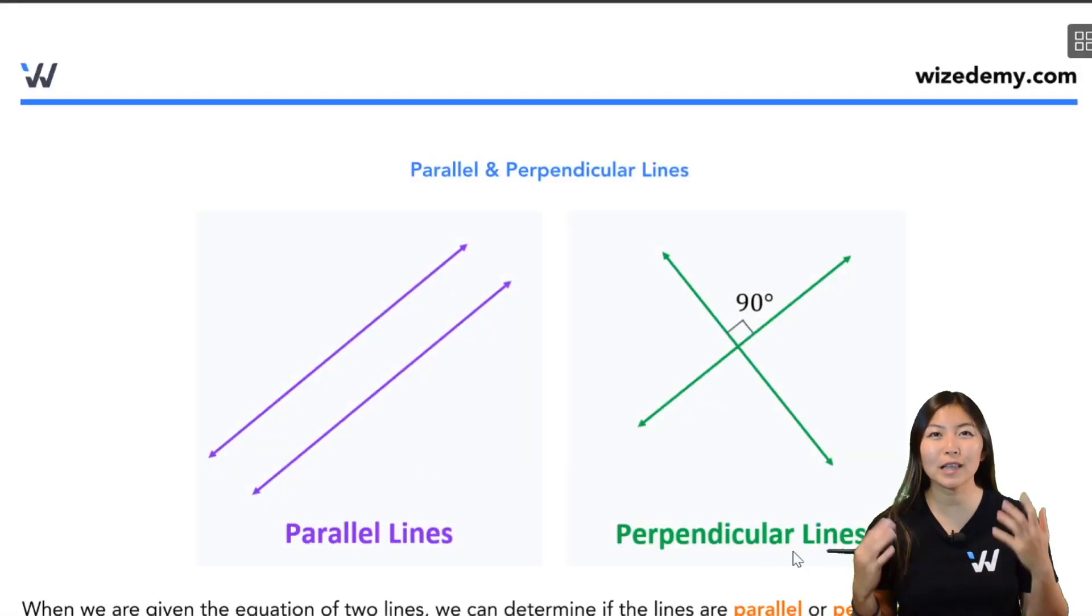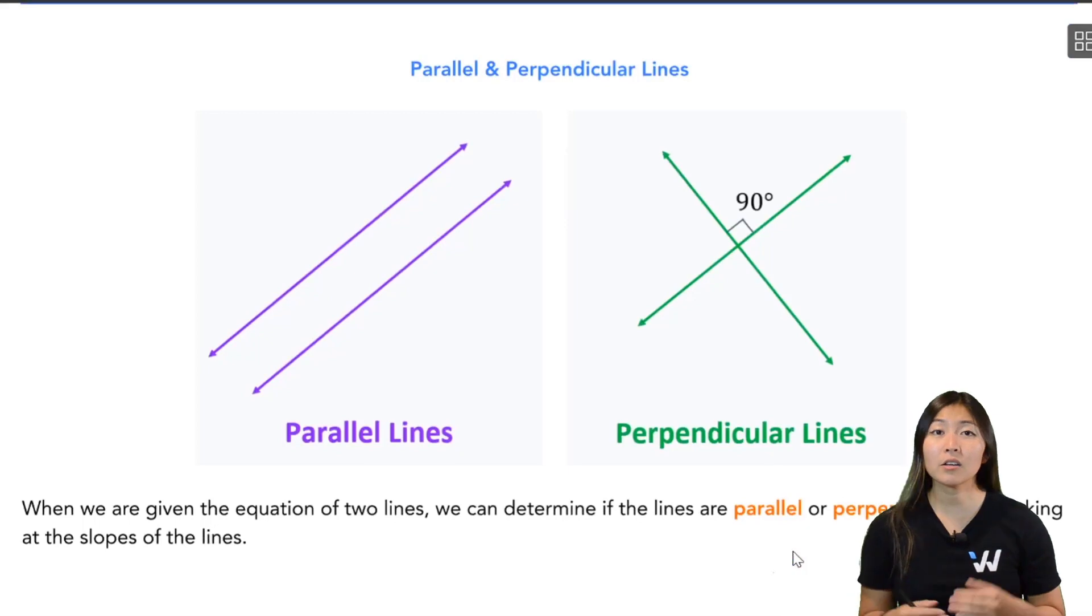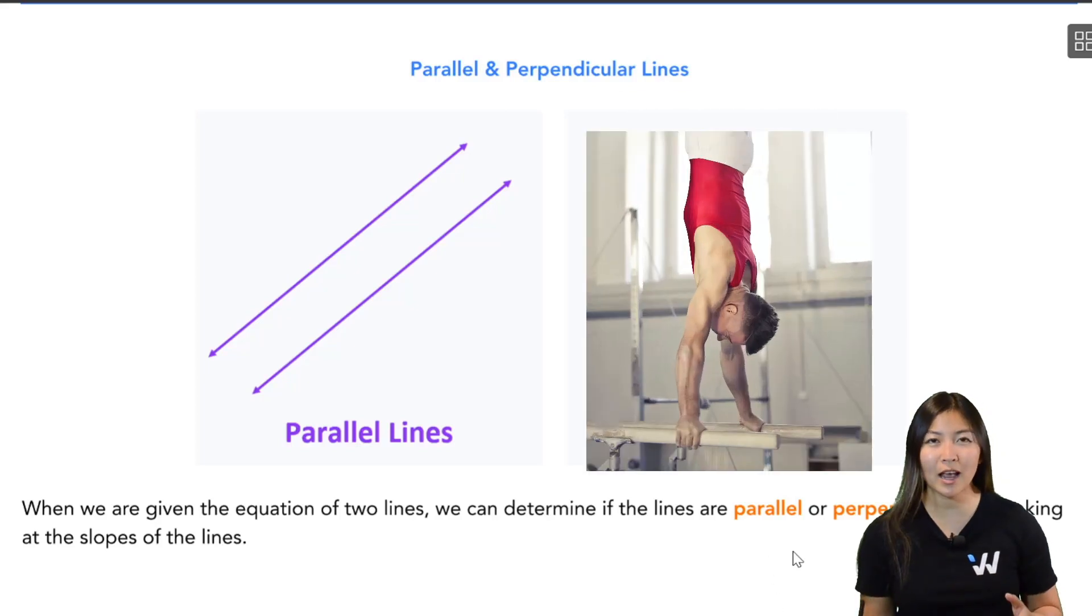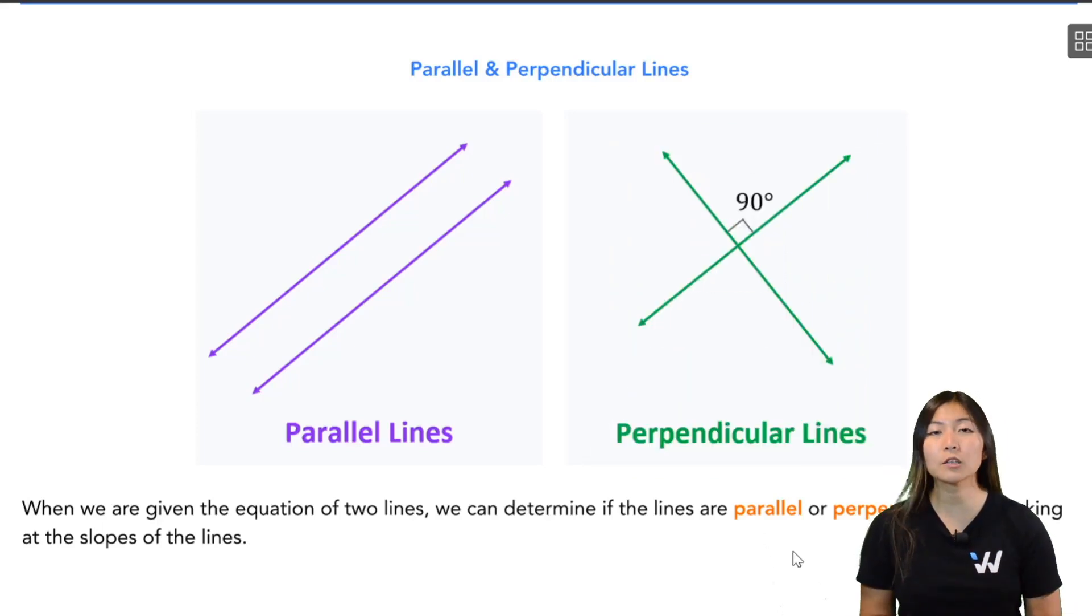Let's quickly review parallel and perpendicular lines. Parallel lines are lines that go on forever side-by-side and they never touch. I like to think of the Olympics when I have parallel bars - two bars that are side-by-side and they don't touch. They're at the same distance the whole way through. Perpendicular lines are the ones that cross at a 90-degree angle, so it crosses at a corner.